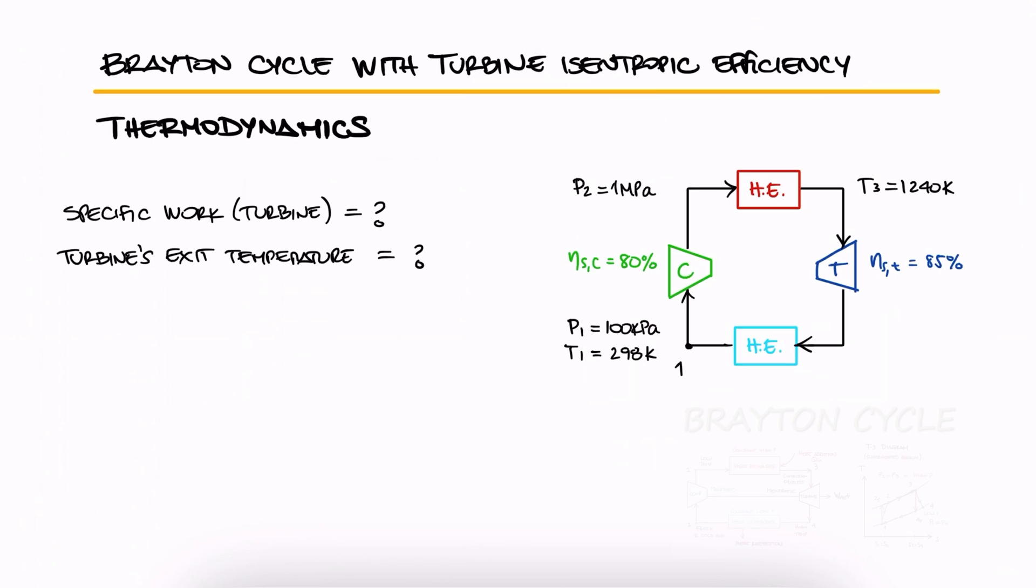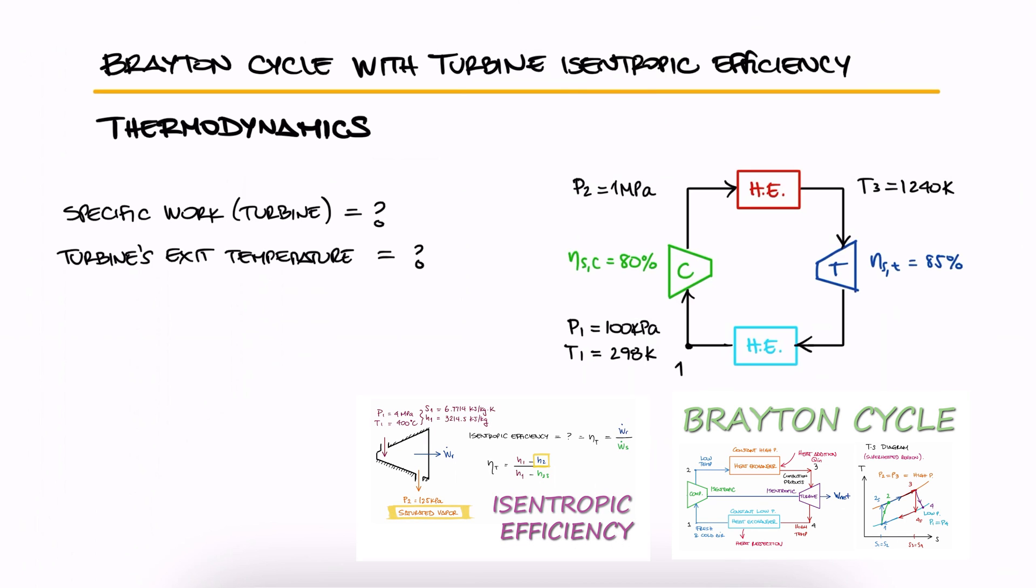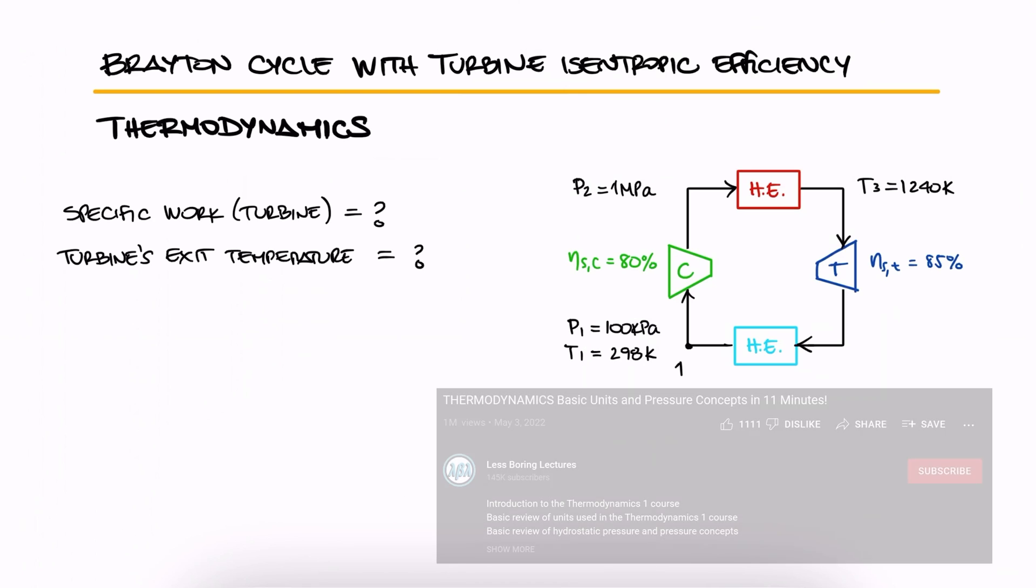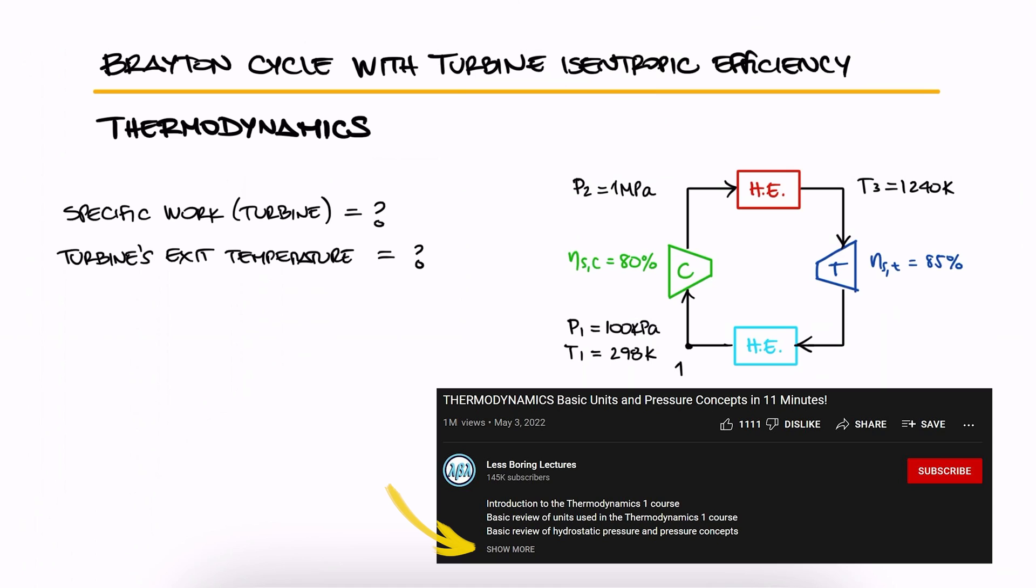This is the second example for the Brayton cycle main lecture, and it uses concepts from the isentropic efficiency main lecture too, so make sure you've studied those two lectures before attempting to solve this problem. The links to those 11 and 8 minute lectures respectively, and all the other lectures of the thermo course, are found in the description below.